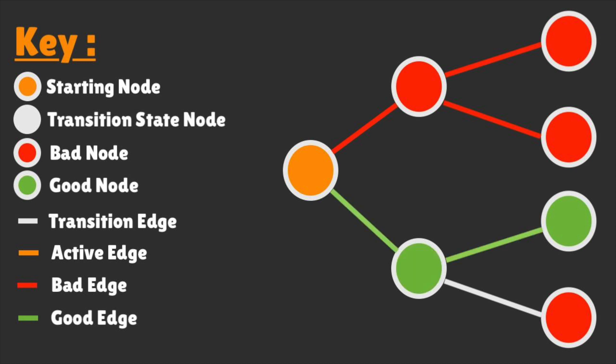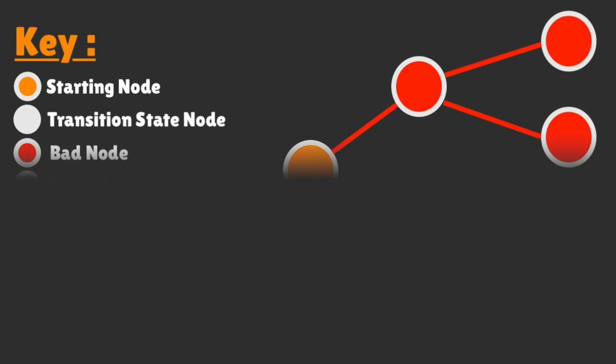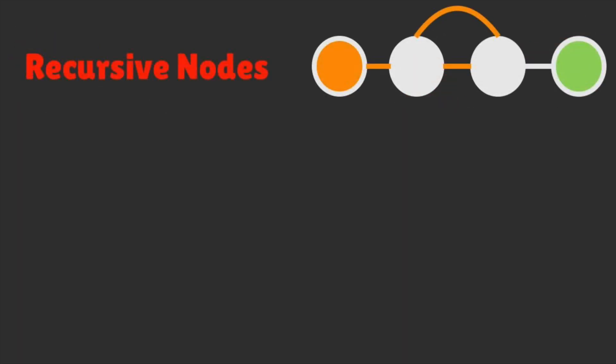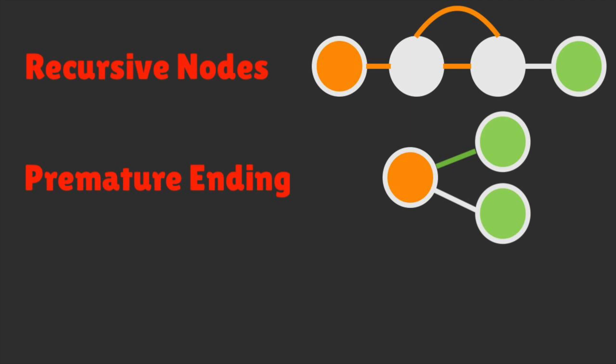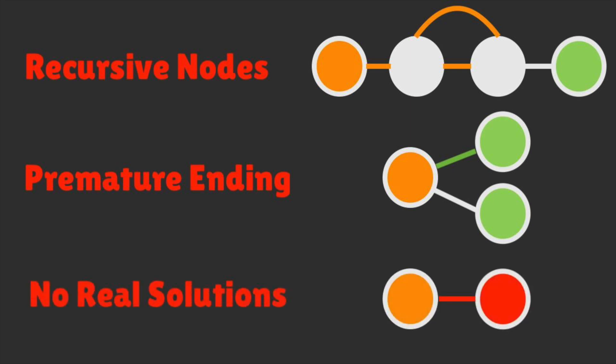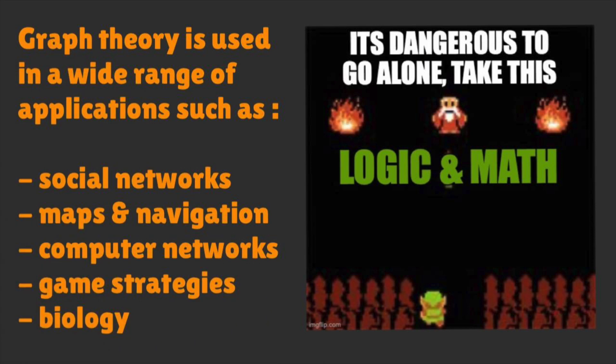Now let's address some complications. Sometimes we have a graph that loops back on itself. Sometimes we have a graph with two answers. And sometimes there might not be a solution. Fear not — even with these challenges, logic and math will be our guide throughout this maze.